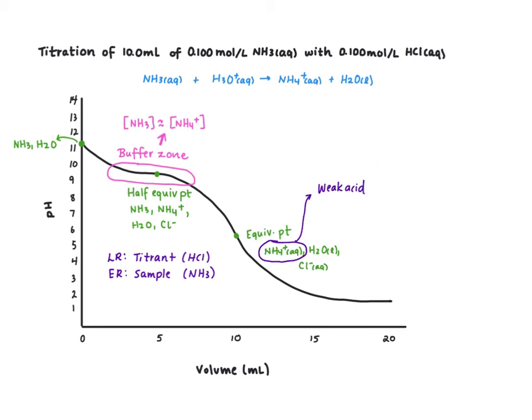Because we have a weak acid present at the equivalence point, the pH of our equivalence point is less than 7. It's about 5.75. This is true for all weak base with strong acid titrations. At the equivalence point you're always going to have the conjugate acid, and so your pH will always be less than 7.